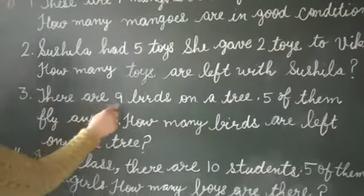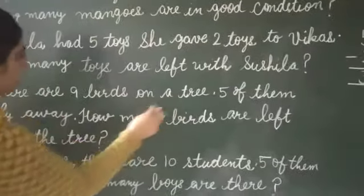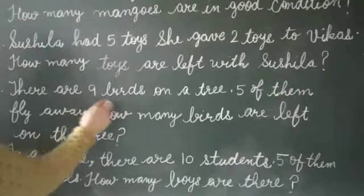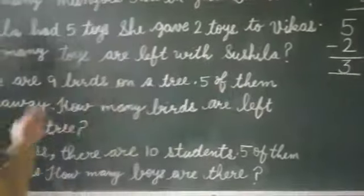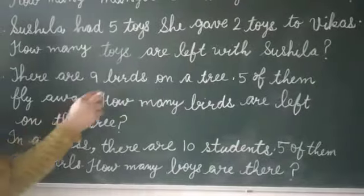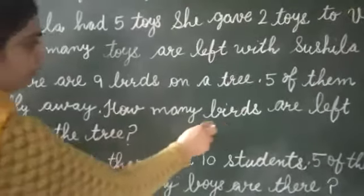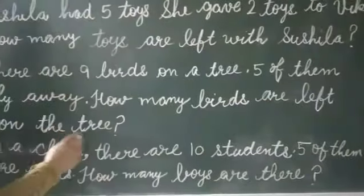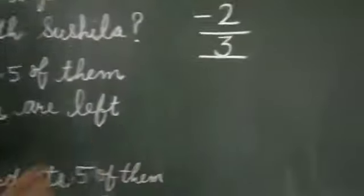Now next question is, there are nine birds on a tree. Tree par kitne birds hai? Nine. Five of them fly away. Five udke gaye. How many birds are left on the tree? Ab tree par kitne birds hai?